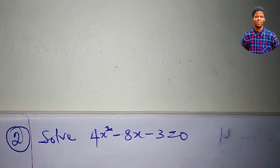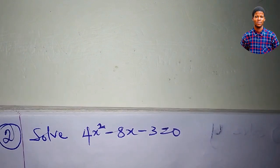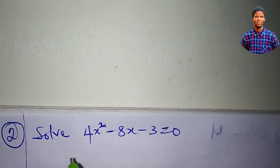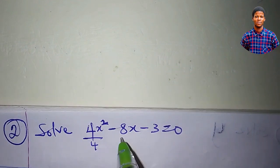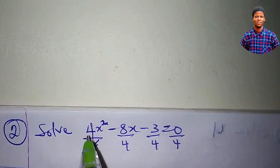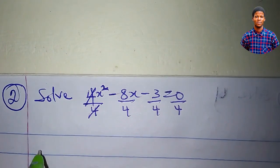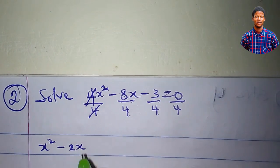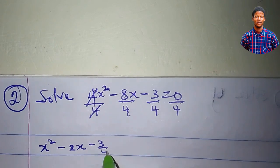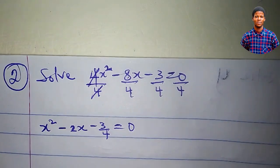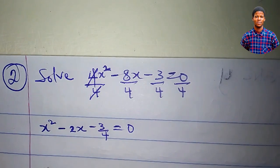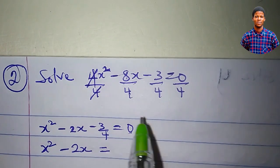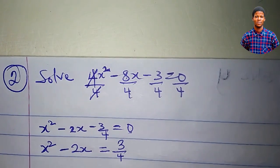Let's solve this equation using the same completing the square method. Just like what we did in the first question, we'll divide through by 4, which is the coefficient of x squared. Dividing through by 4: 4 cancels 4, so we have x squared, then 8 divided by 4 is 2, then minus 3 all over 4, equal to 0. Moving minus 3 over 4 to the right, it becomes plus, so we now have x squared minus 2x equal to 3 over 4.